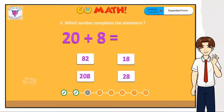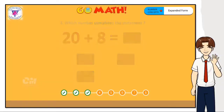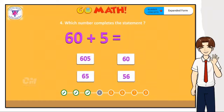Which number completes the statement 20 plus 8 equals? You are right — the correct answer is 28. Here is another statement: 60 plus 5 equals 65. You are right — the correct answer is 65.